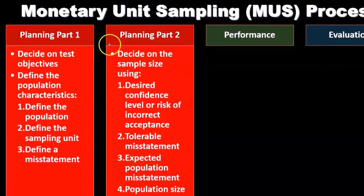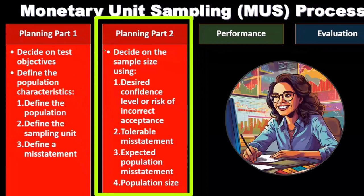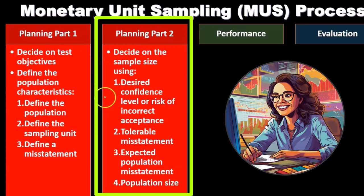Still in the planning area, we decide on the sample size using the desired confidence level or risk of incorrect acceptance, tolerable misstatement, expected population misstatement, and population size.